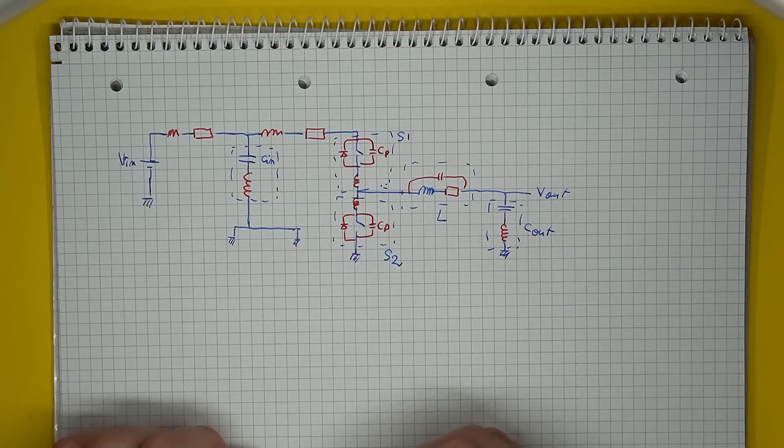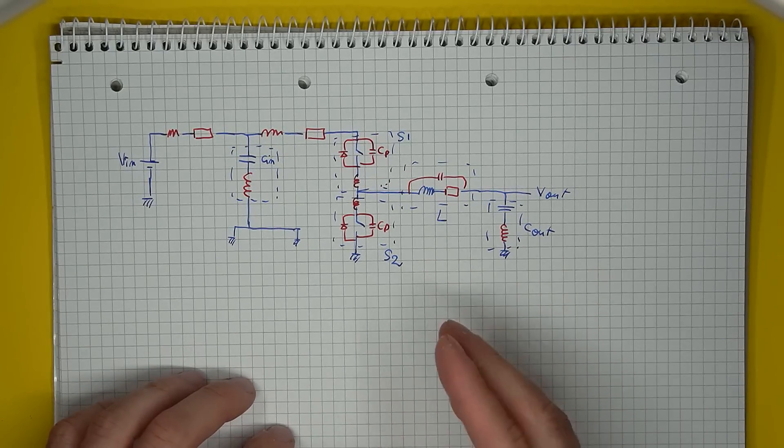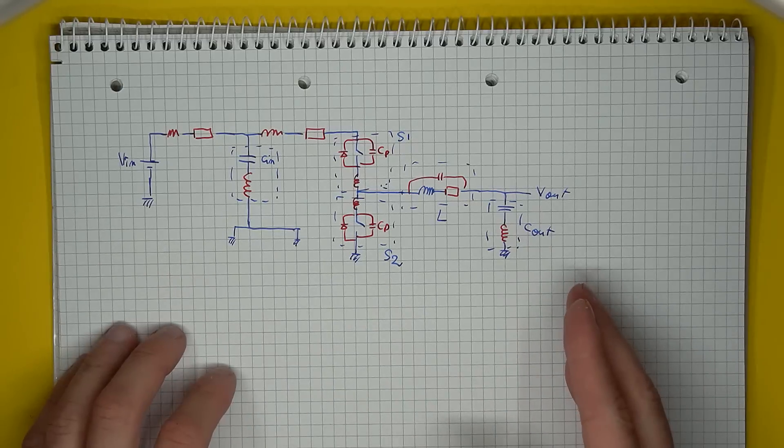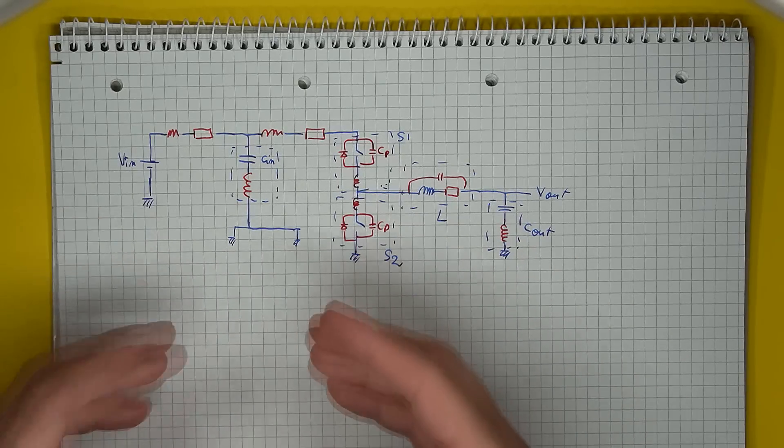Well, a more complete model that takes into consideration the various parasitics of interest of a buck converter will look something like this. Your interconnecting traces have both inductance and resistance.